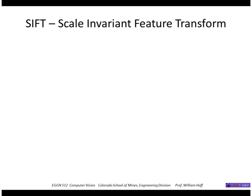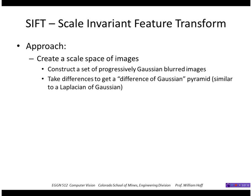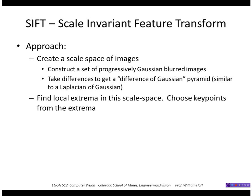The approach of this transform is to first create a scale space of images using the Gaussian function with increasing values of Sigma, creating a set of progressively blurred Gaussian images. We then take the differences of each pair of images in the scale to get a Difference of Gaussian pyramid. The Difference of Gaussian is a very good approximation to the Laplacian of Gaussian function.